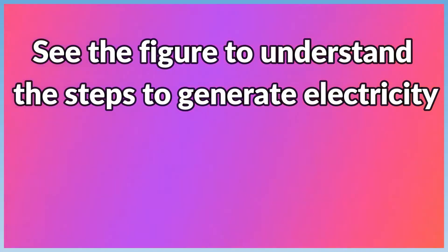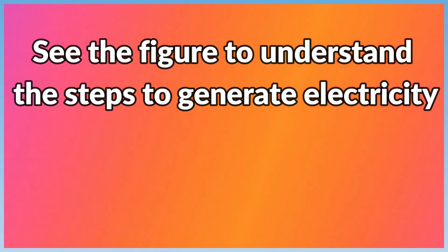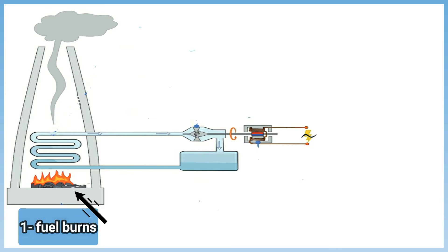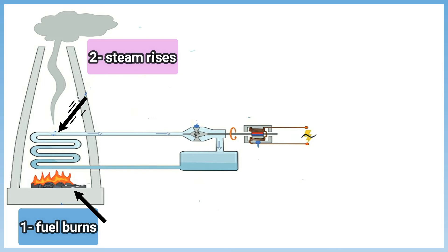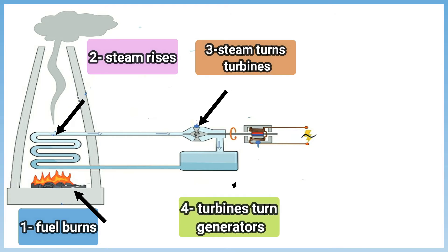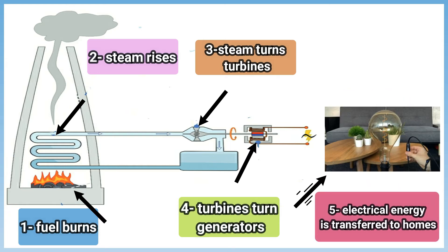See the following figure to understand the steps to generate electricity. Step 1: Fuel burns. Step 2: Steam rises. Step 3: Steam turns turbines. Step 4: Turbines turn generators. Step 5: Electrical energy is transferred to homes.